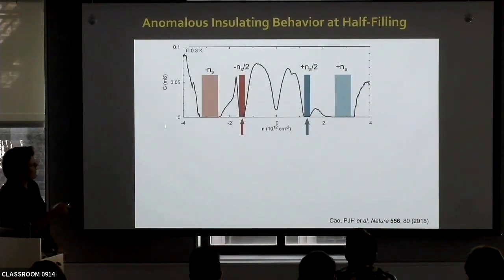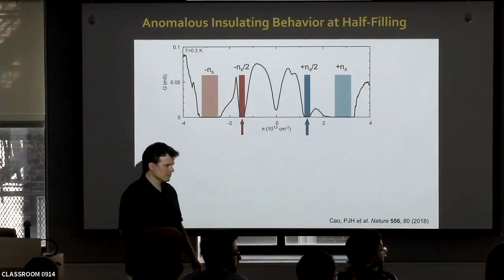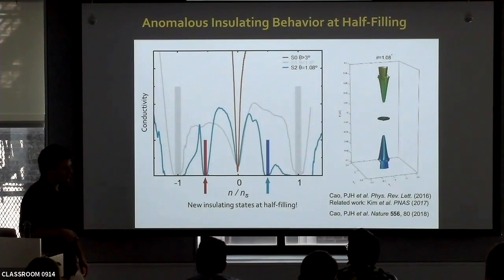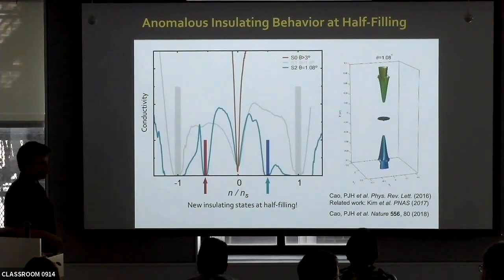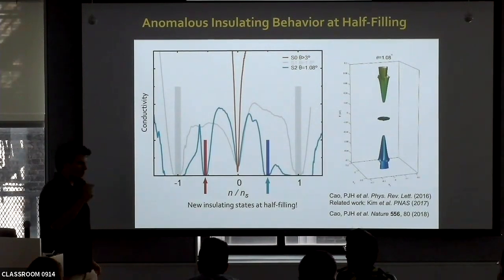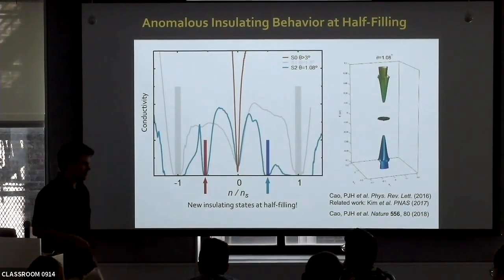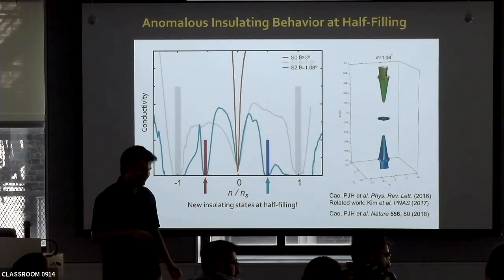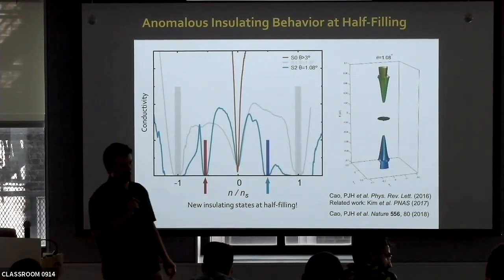These are actual real data with real units — conductance in units of conductance quanta. The density axis is defined via Hall measurements, Hofstadter butterfly measurements, and Landau fan diagram measurements — all agreeing with each other. Charge neutrality I call zero. From there to the top of the band, half filling means half filling of the conduction band or half emptying of the valence band. When we add electrons this direction, add holes this direction, at two electrons or two holes per moiré unit cell, we see a dip.